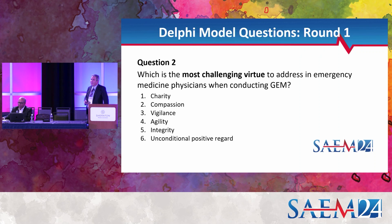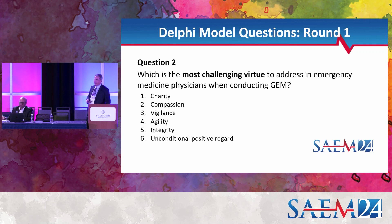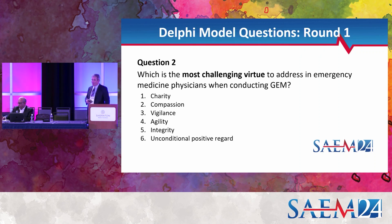Audience member: I was confused about what you're trying to address with the question — what is a 'challenging virtue,' and does a virtue need to be addressed? What was the intent? Is it more: which of these virtues is most important to be an ethical researcher? Dr. Kumar: which of these virtues should be considered when considering ethics? Audience: the word 'challenging' is throwing me off. Response: the wording can definitely be improved. Thank you.